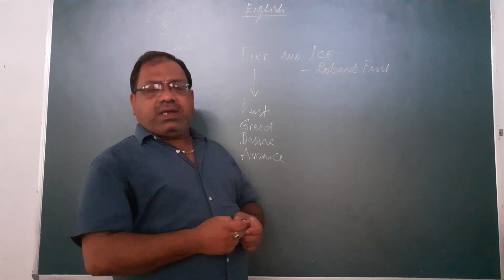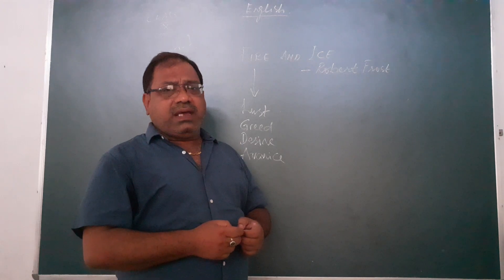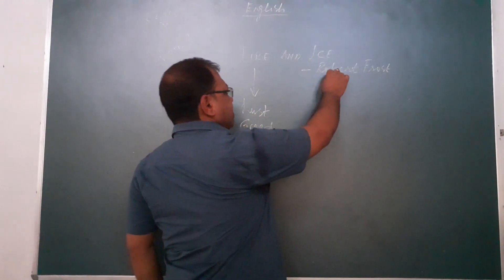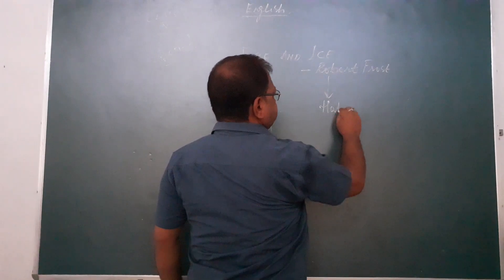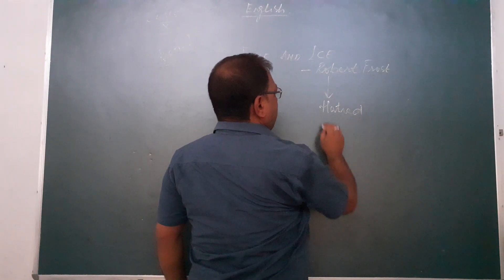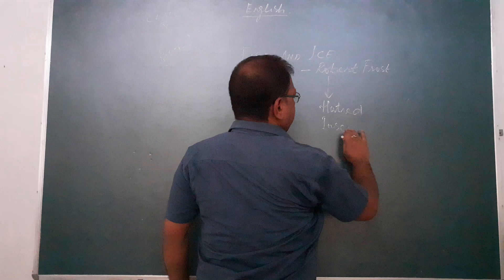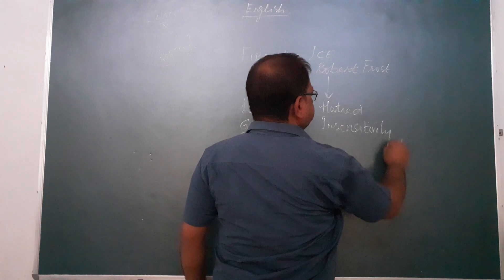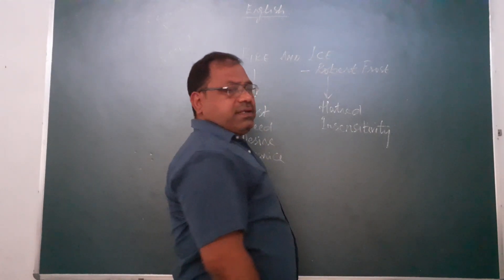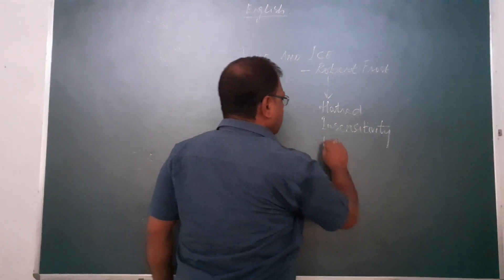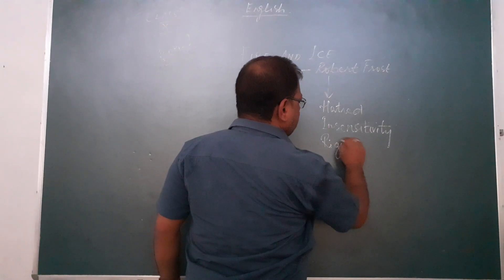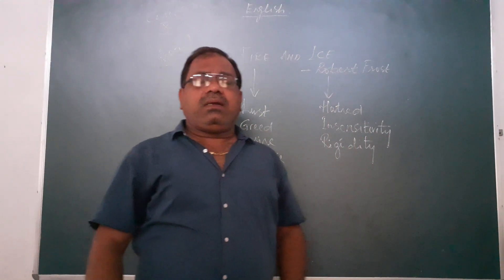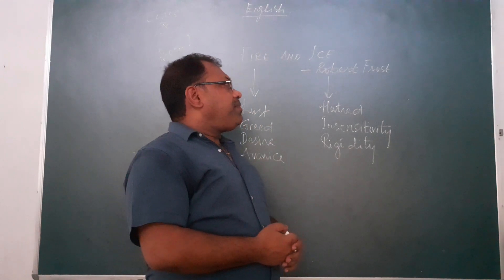Now the second theory of Frost is that the world will end in ice. Ice symbolizes human beings' hatred, insensitivity — which means lack of emotions — and rigidity. It symbolizes all these things. The second theory is that the world will be destroyed, will be perished, by ice.